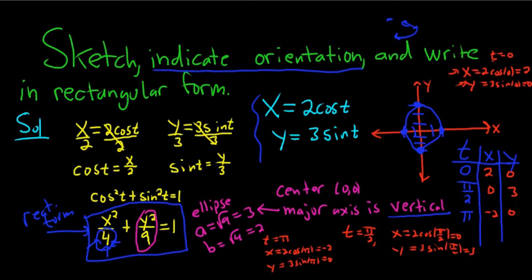So recap. So you plug in 0, and you get your x and your y. So we got 2 and 0. You plug in pi over 2, you get your x and your y. So we got 0, 3. And you plug in pi, and you get your x and your y. We got negative 2, 0. It's very tedious. So we have three points.